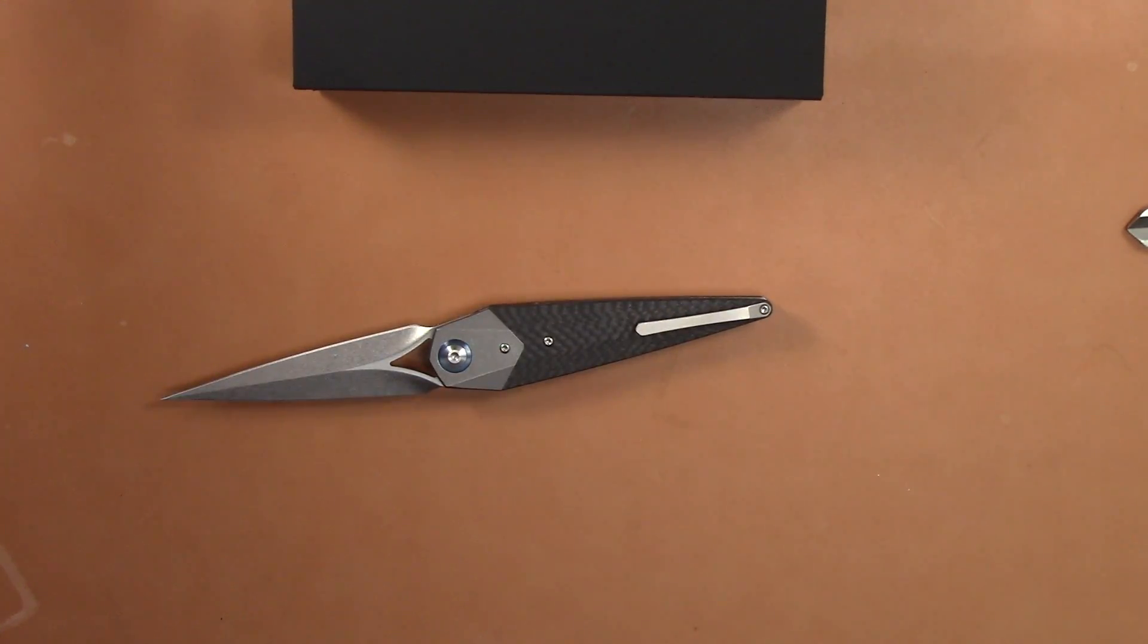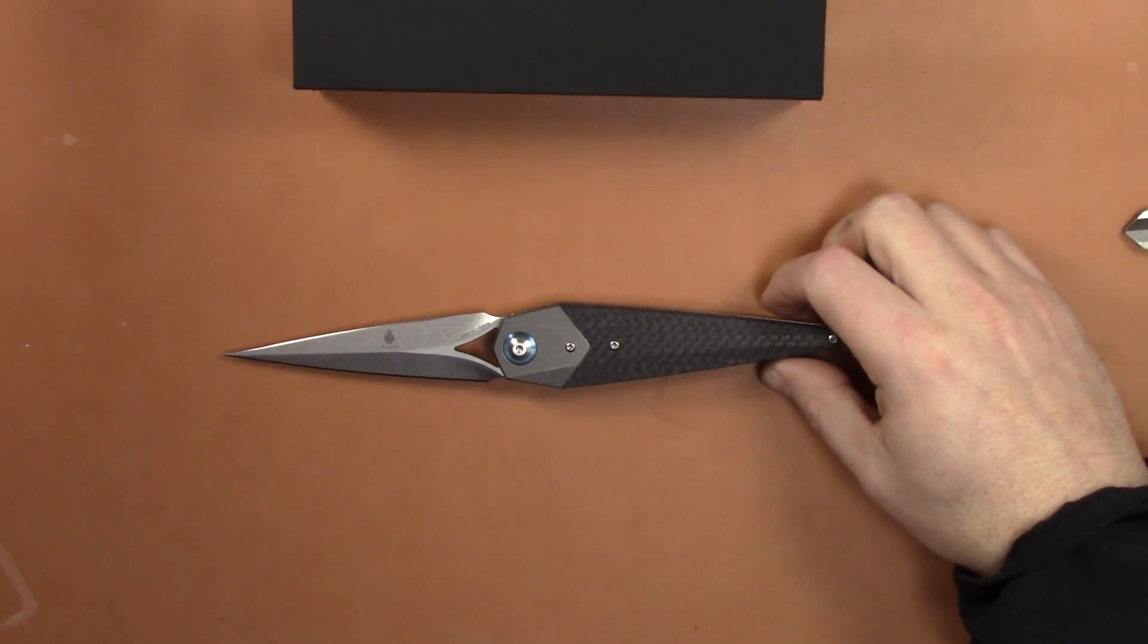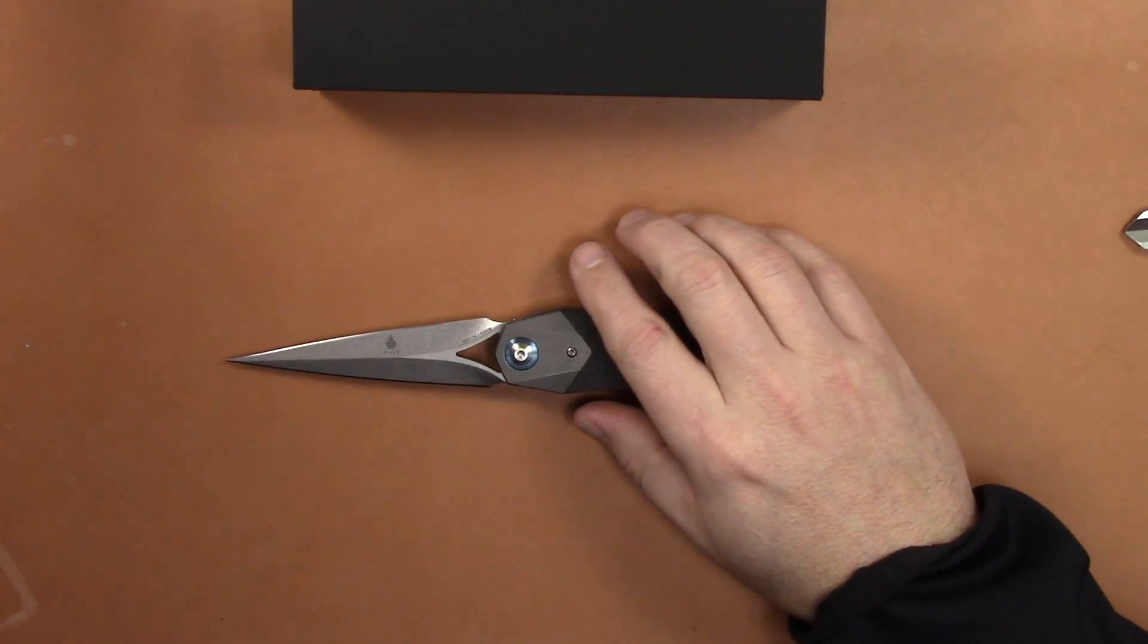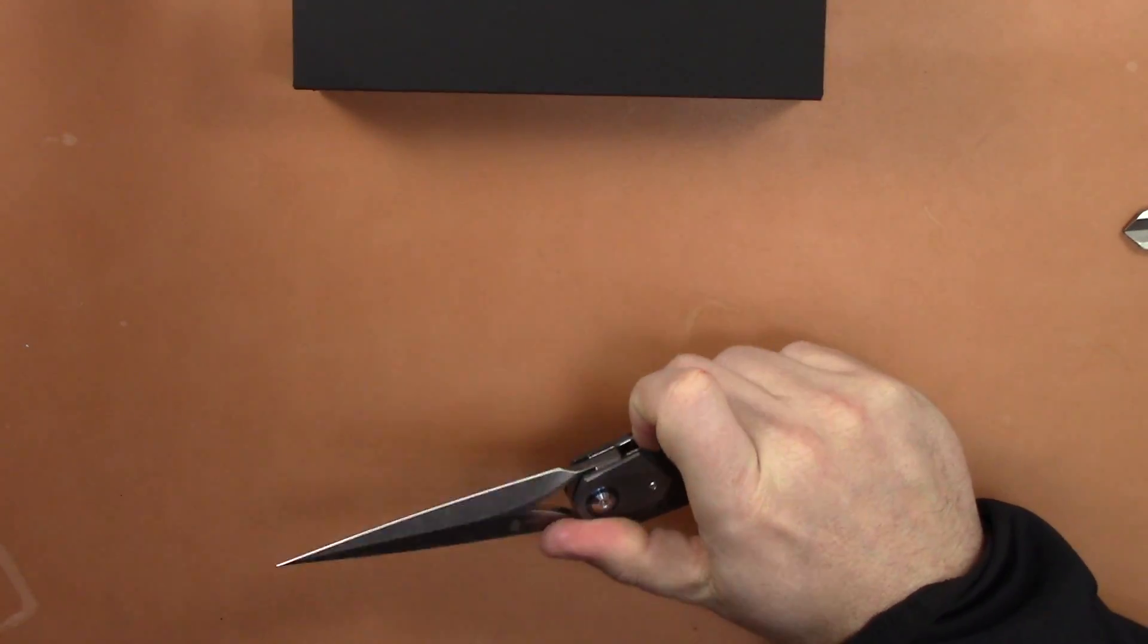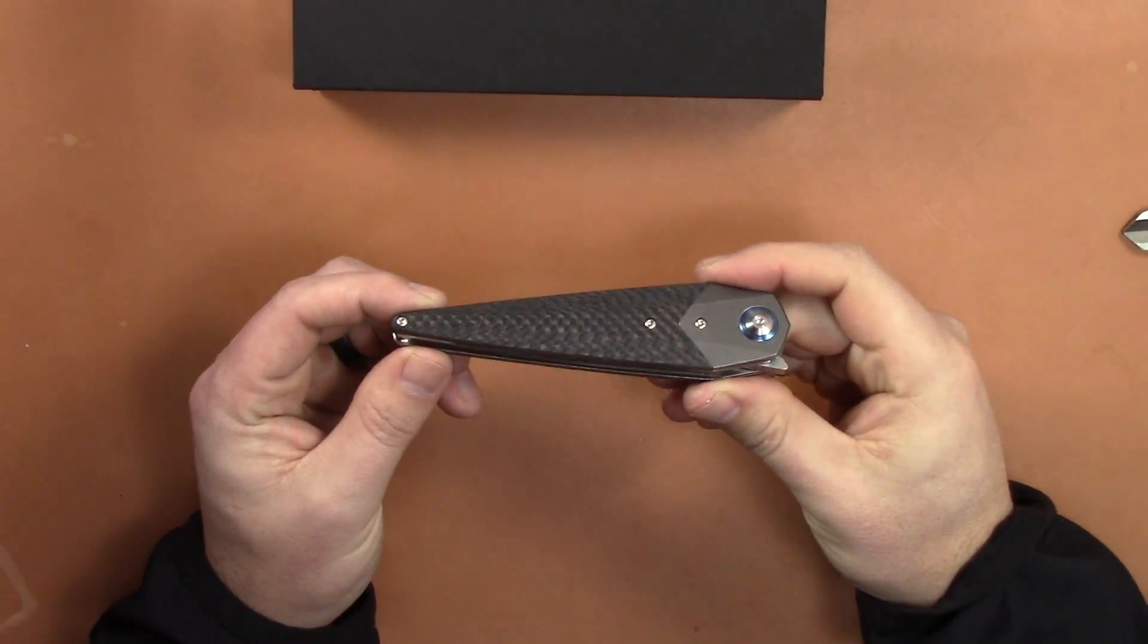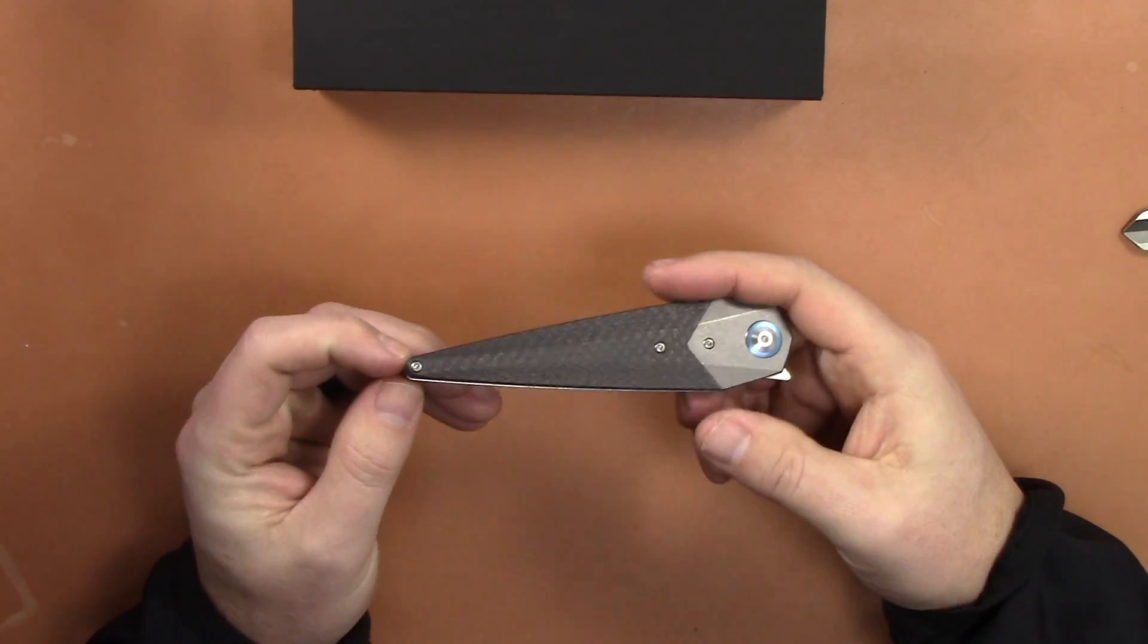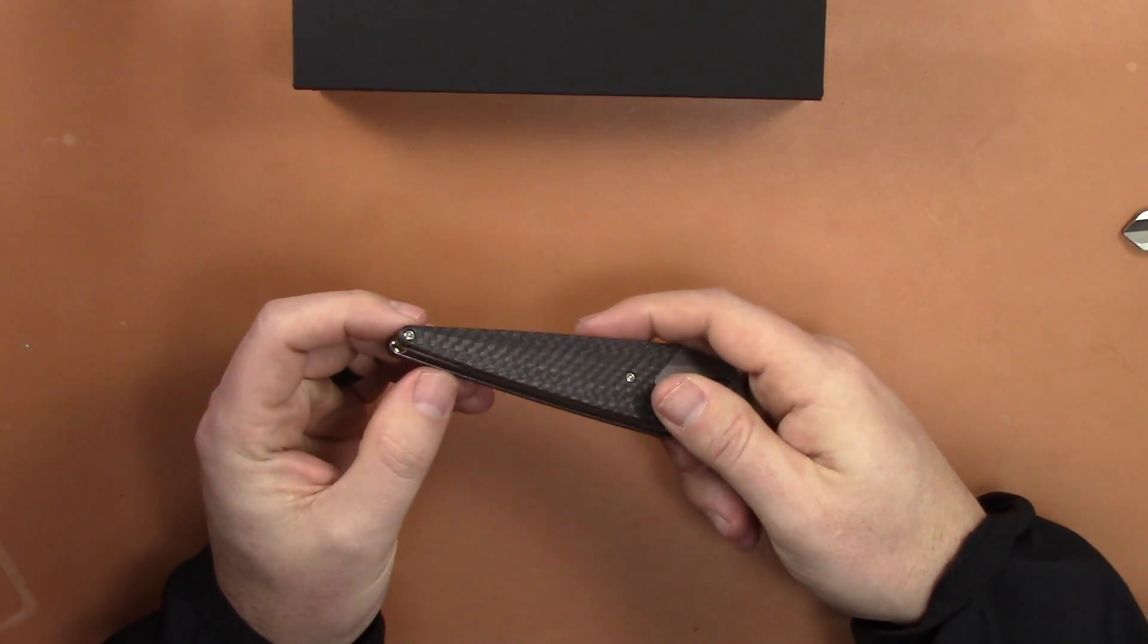Basic length on this is 8.3 inches. Blade is 3.65, blade thickness 0.16, like I said a dagger blade. Handle length is 4.65 and weighs 3.6 ounces, pretty lightweight actually. The entire blade is completely enclosed in the handle, I always love that. And you got one standoff here, so very open and you're not getting your finger on the blade there.